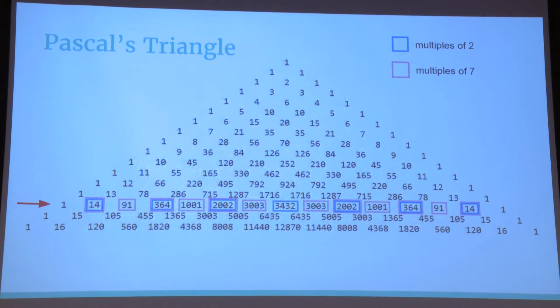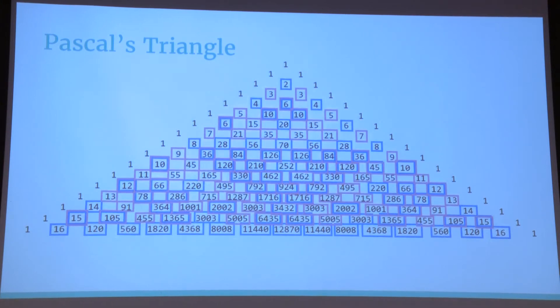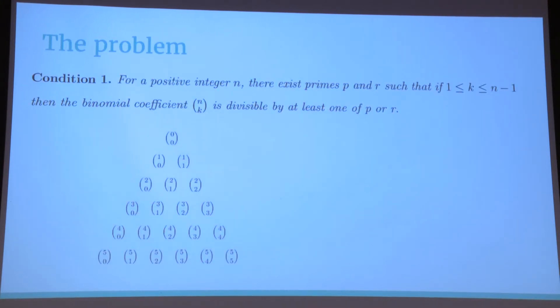No matter which row do we take in this triangle, we can always find two primes, so that if we paint the multiples of one prime with one color, and the multiples of the other prime with another color, all the numbers in the row are painted? Well, until 16, it works.